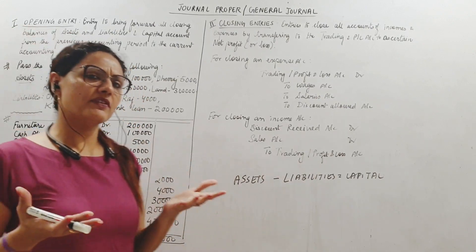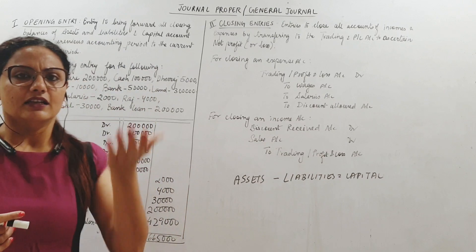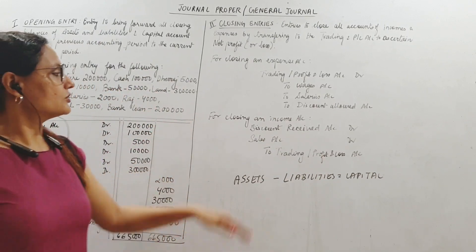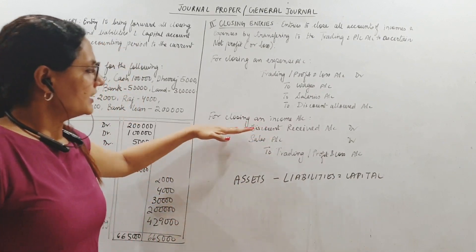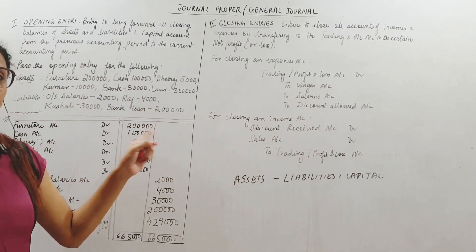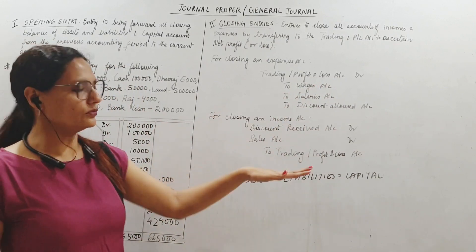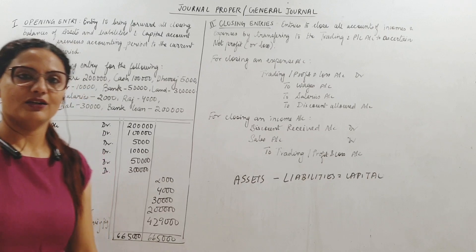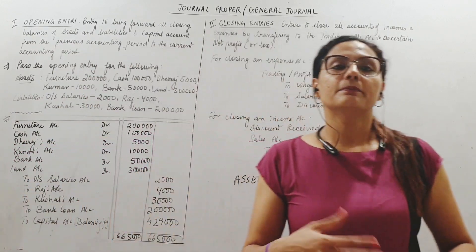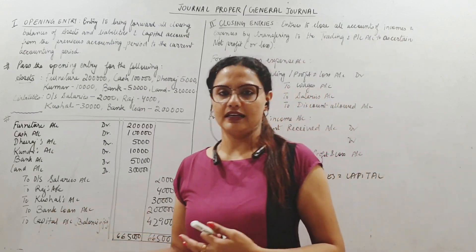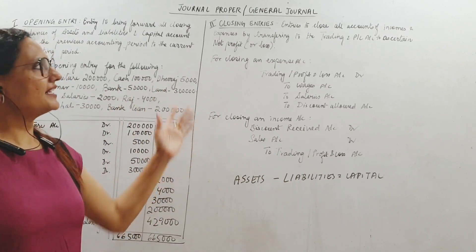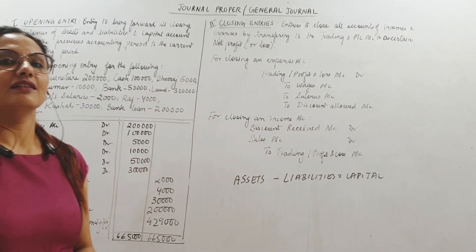Similarly for income, all incomes will have credit balance. So credit balance is already there - to finish it, debit it. So debit all incomes: discount received account, sales account, all our incomes. All those have been debited to close and transfer to trading or profit and loss account. So these two entries will be here. You might be just given pass the closing entry for an expense or an income. So you just need to know this, and where all will this find place? In the journal proper.